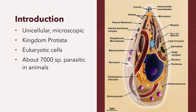Protozoa are unicellular, mostly microscopic organisms classified under the sub-kingdom Protozoa of the kingdom Protista. They are eukaryotic cells, meaning they have a distinct nucleus as well as organelles such as endoplasmic reticulum, Golgi apparatus, and mitochondria found in the cytoplasm. According to Levine in 1985, about 65,000 species of Protozoa have been named, of which most are free-living.